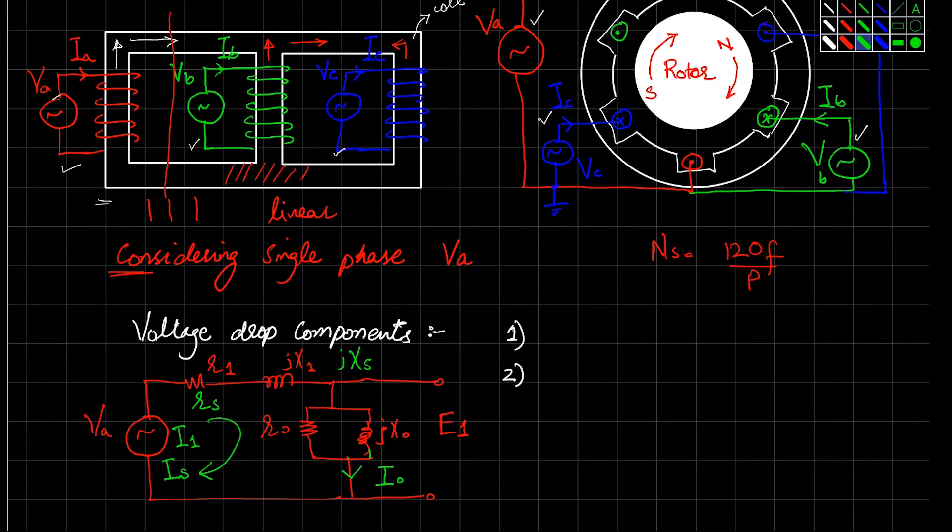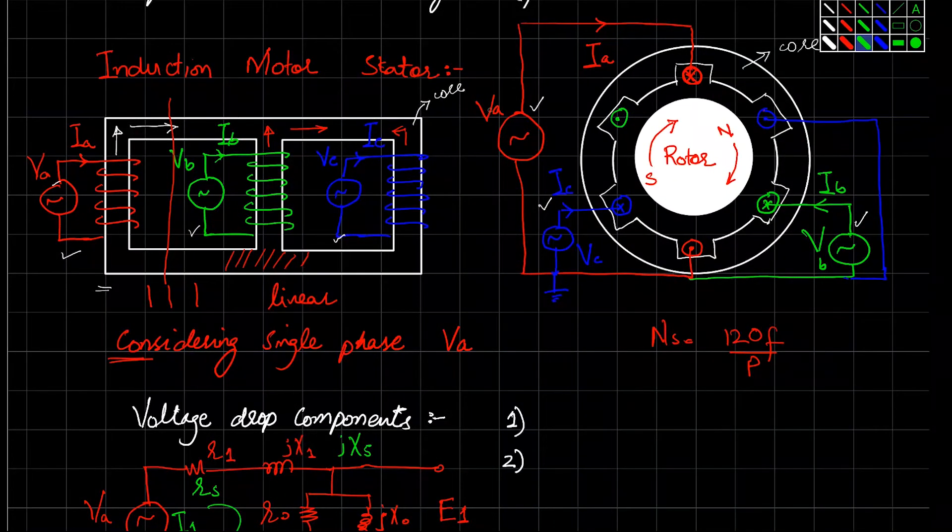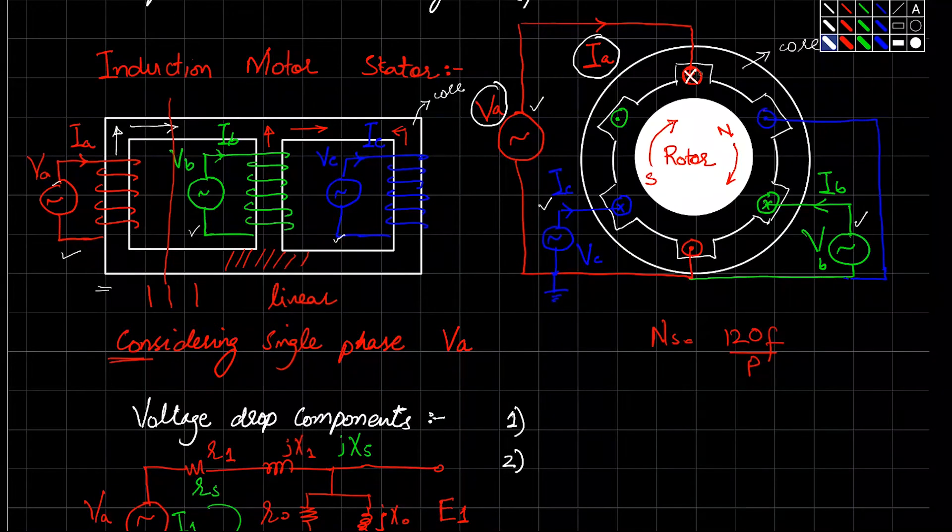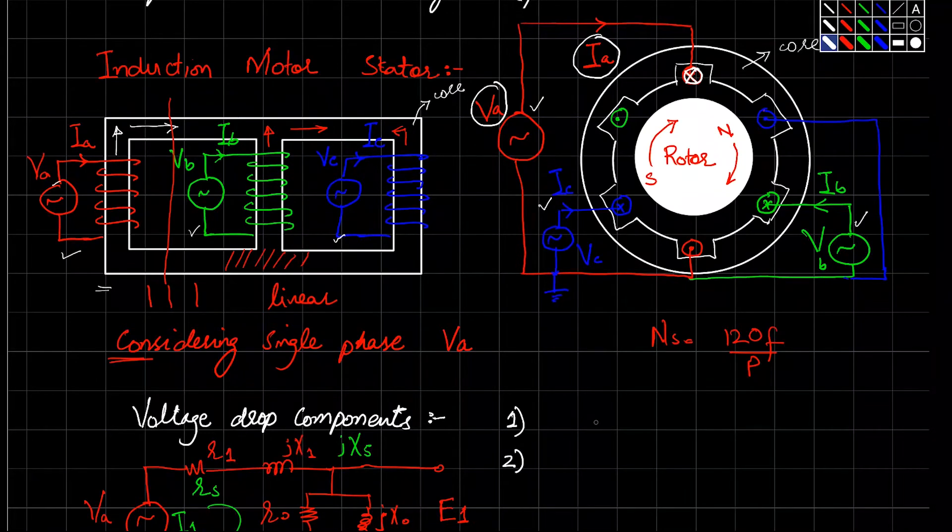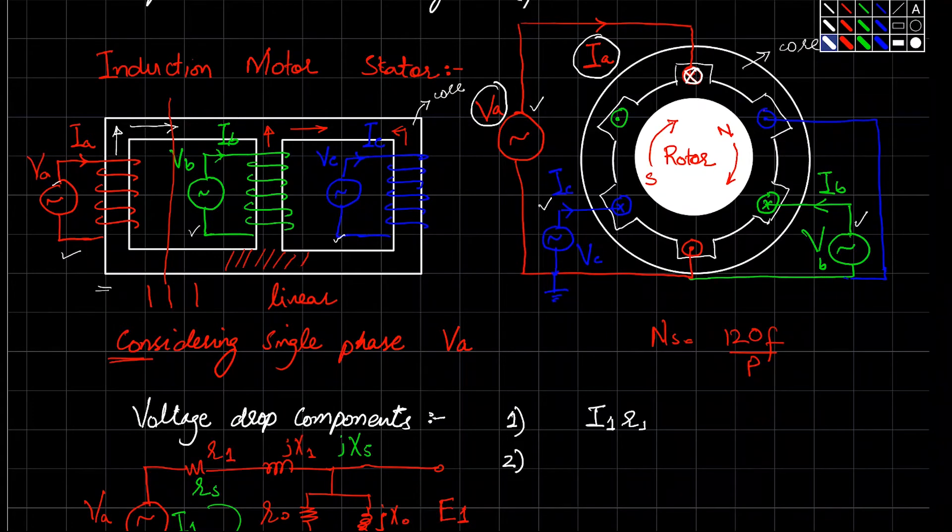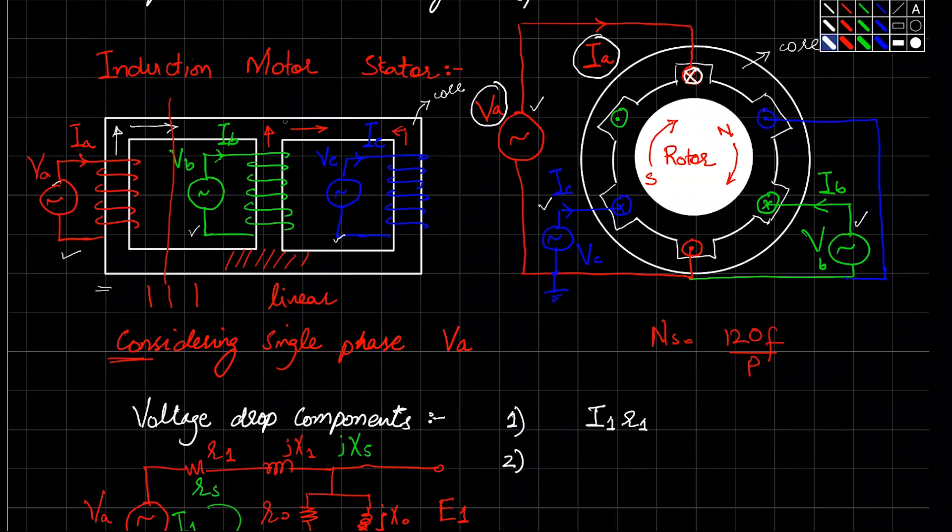There are two voltage drop components in this diagram. Consider again for this stator: you have VA source, current IA, and here you have a coil which is a winding. The winding has some resistance, so you will have a voltage drop in terms of I1*R1. You have the second voltage drop in leakage reactance.